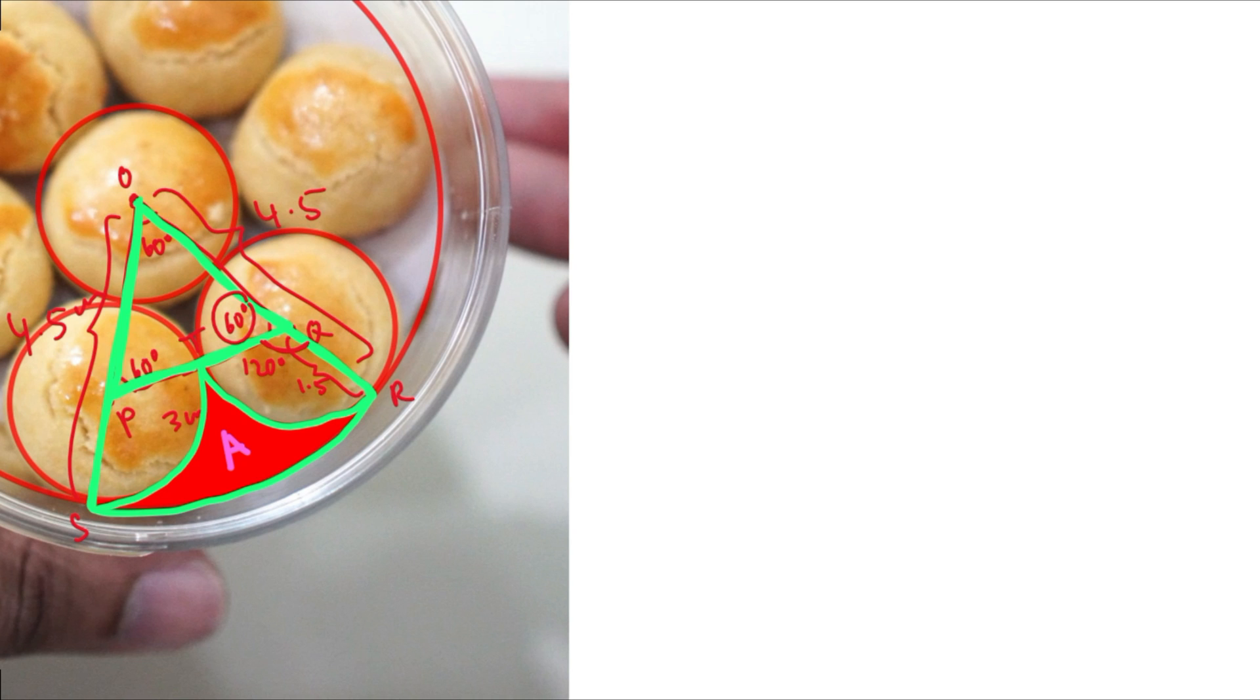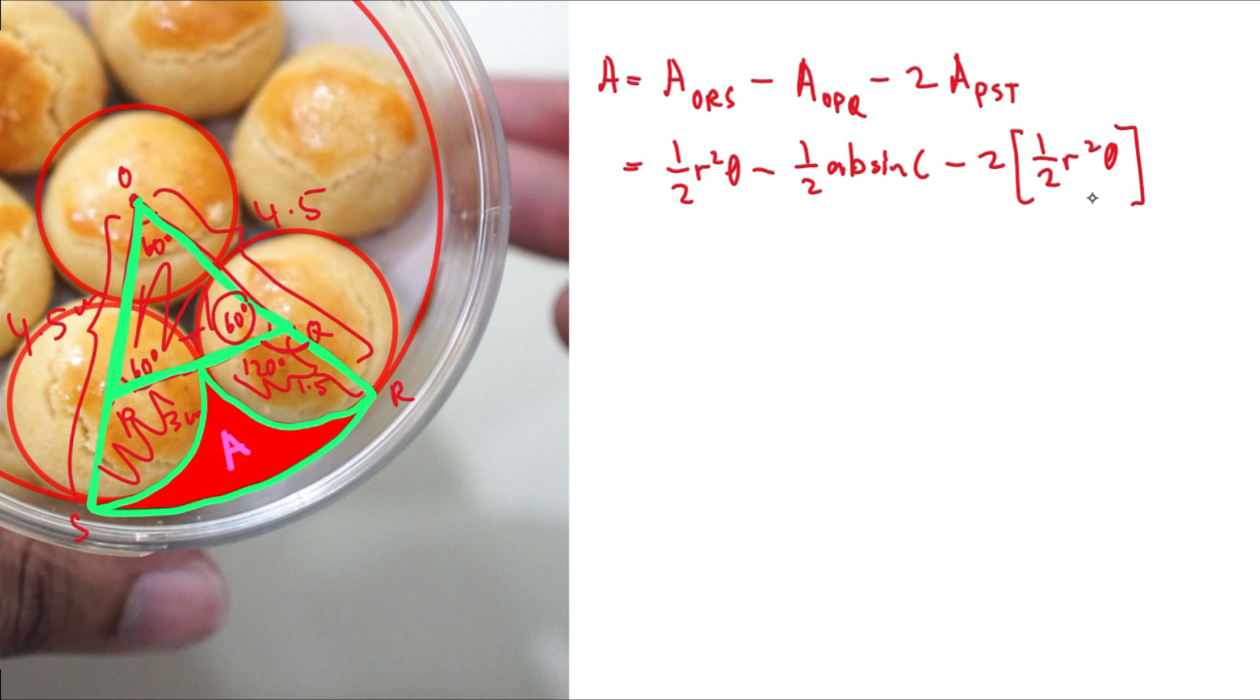So now this area, area between the biscuit and the container A will be equals to the area of the big sector ORS, area of sector ORS minus the area of the triangle, this triangle. So we can use the same formula as earlier. That is, let's write it down first, area of triangle OPQ. And we minus two times the area of the sector, which is these two sectors. So this will be two times area of sector. Let's just choose one. So let's take PST. The area of the large sector will be 1 over 2 R square theta minus the area of the triangle, which is once again 1 over 2 AB sine of C and minus two times the area of sector PST, which is 1 over 2 R square theta as well. But the values of R and theta will be different for each. So let's call this 1 and 2 so that we don't get confused.